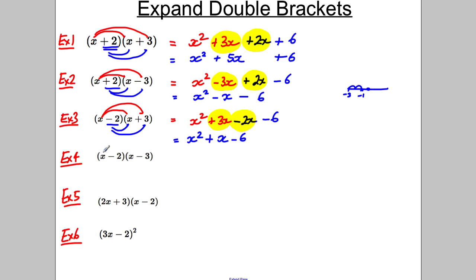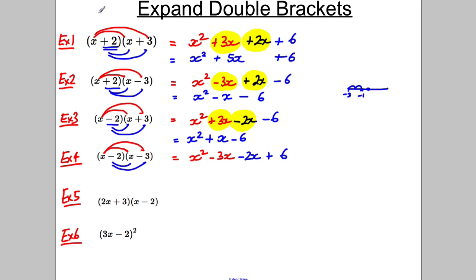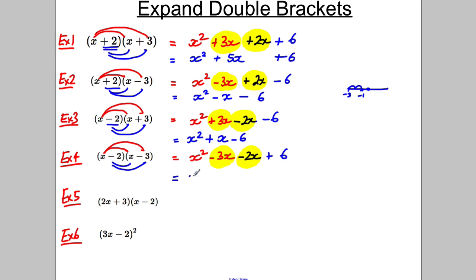The next one is the same as those above but with two negatives, so be careful. x multiplied by x, x multiplied by negative 3, x multiplied by negative 2x — so we have negative 5x's in total — giving x² − 5x + 6.